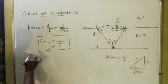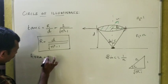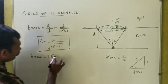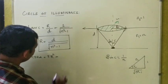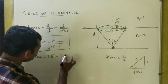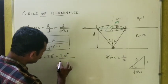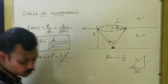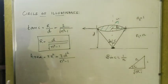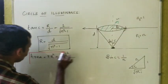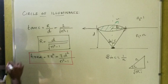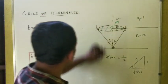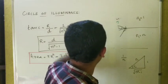The area of the circle of illuminance is πR² = πD² / (N²−1). These two formulas are very important from the board exam point of view. You should use them to solve exercise question 9.5 from the NCERT textbook.